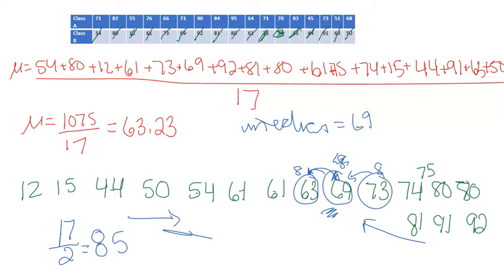Now, the mode. When we're doing the mode, we have to look at the number that shows up the most often. Okay, so mode: 12, 15, 40, going through it, 61 shows up twice, and 80 shows up twice. So there's actually two modes.